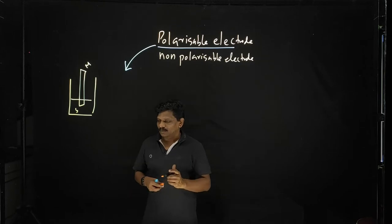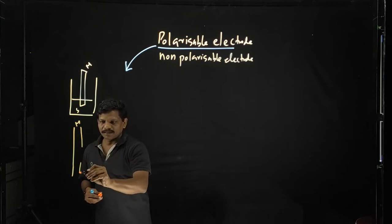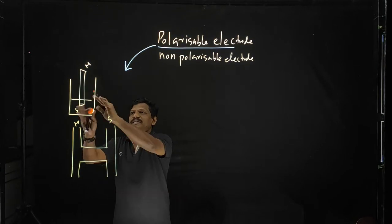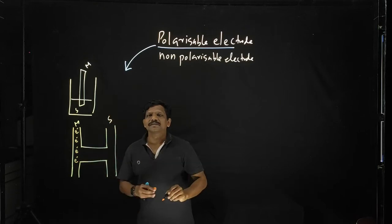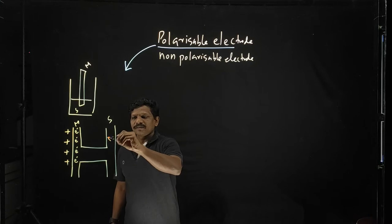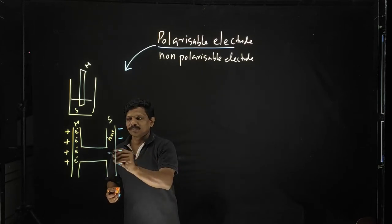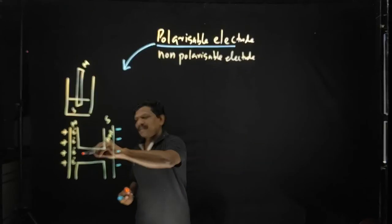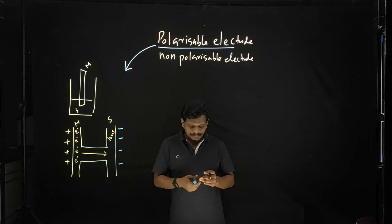In the case of a polarizable electrode, you can draw this situation like this. This is the metal part, connected to the solution part. This is the metal and solution interface. You know that metal consists of electrons, and you can write here the positive charge on the metal side. On the solution side, it is ions, and you can write negative charge corresponding to the positive charge.